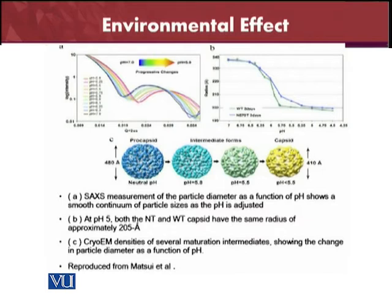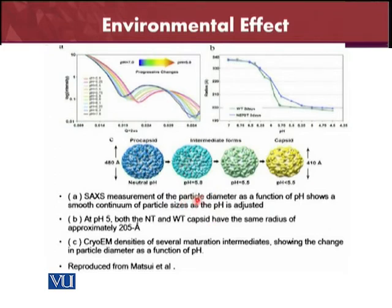Here is one more example. SAXS measurements have been done with these experiments, measuring particle diameter as a function of pH and showing the smooth continuation of particle size. We can see the pre-capsid at neutral pH, then at pH 5.8 it is lower, then at pH 5.5 it is even lower, and then the capsid form, intermediate forms, and final capsid can be seen clearly.